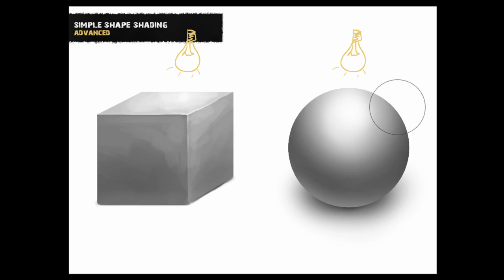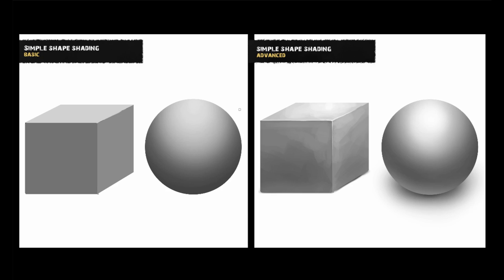Now let's take a look at how the simple shading competes against the advanced shading. Here we see side by side the basic shading — which is basic, but we can already see things in 3D — and then the more advanced one where we add bounce light, add the shadows, and really work on the lighting: where the light is strongest and where the object is being hit by the light less.